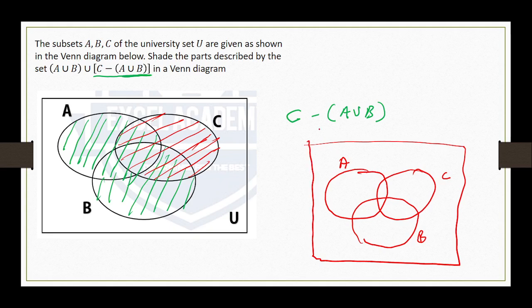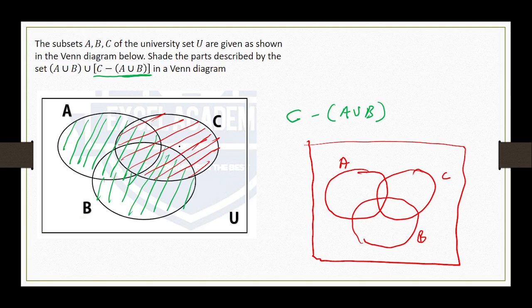To sketch C minus (A union B): remember A union B is the one in green. C is represented using the red color. To show C minus (A union B), we need the region of C that does not overlap with A union B. This particular region — the part of C not covered by A union B — is the region right here.